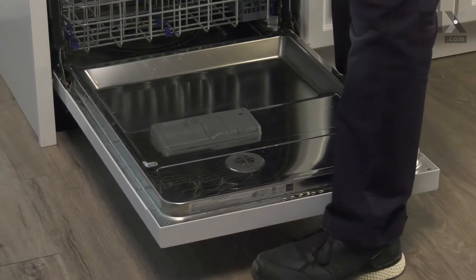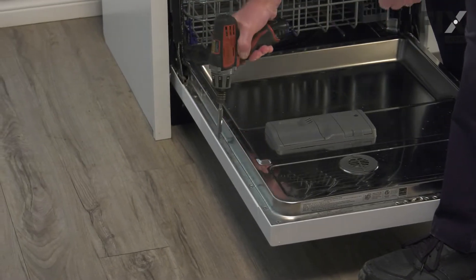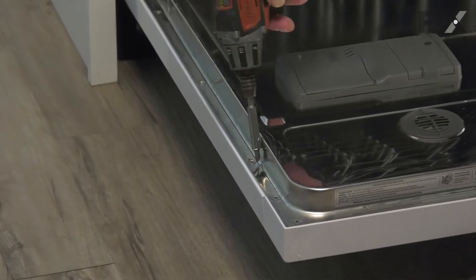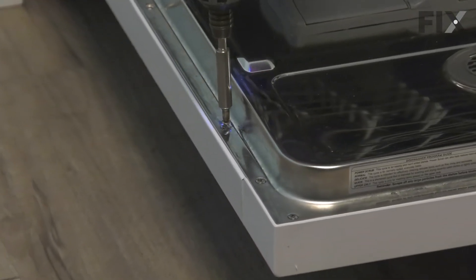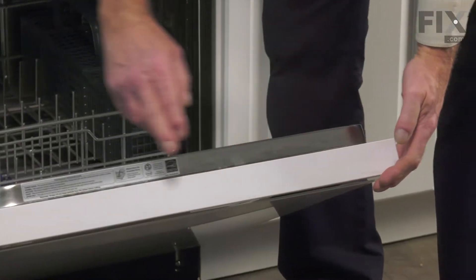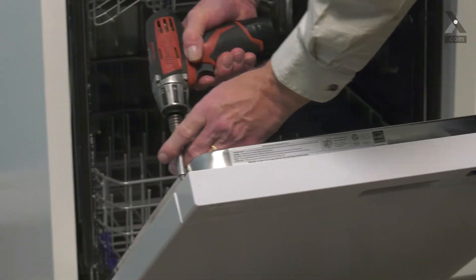On this particular model, the three bottom screws that secure the outer panel to the inner panel are all about three quarters of an inch long. There are also eight more screws around the control panel, and there are different lengths. Take note of those.